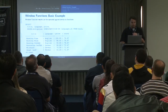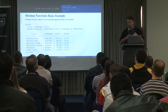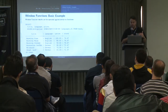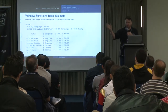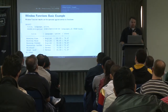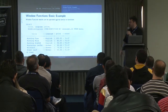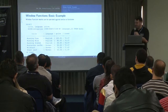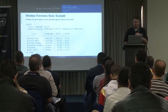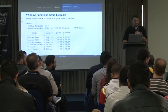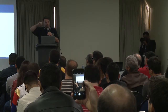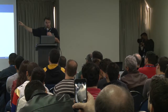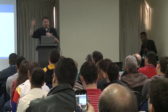You can treat the result of a windowing function just like a regular function output. Here the only difference is I'm adding a ROUND function — I'm rounding that average price. The ROUND takes two parameters: the first is the results of the average price over that PARTITION BY, and the second (two) is how many decimal places.